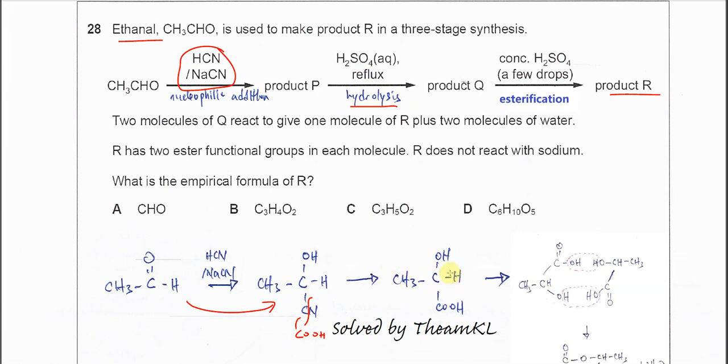Product Q has two functional groups now: OH and COOH. This molecule can actually undergo self-esterification itself, because this molecule has two functional groups which can undergo esterification.